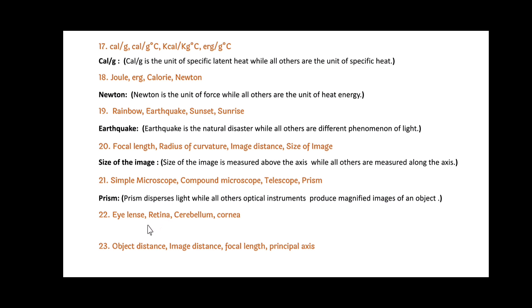Next: eye lens, retina, cerebellum and cornea. Friends, here cerebellum is the odd one out. Since cerebellum is the part of the brain, while all others — eye lens, retina and cornea — are parts of the eye.